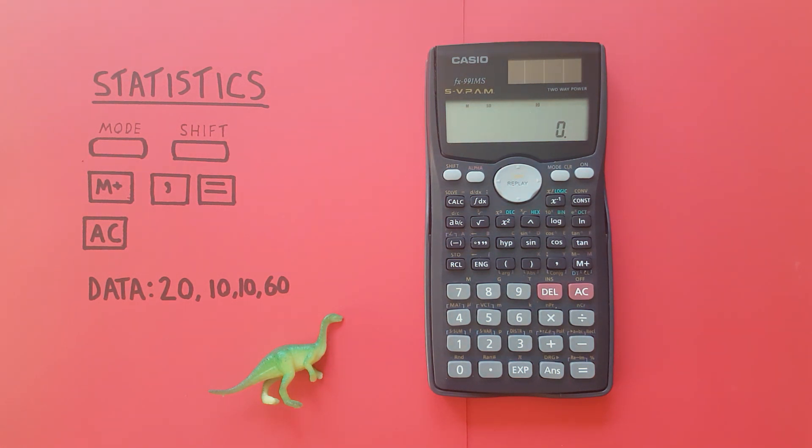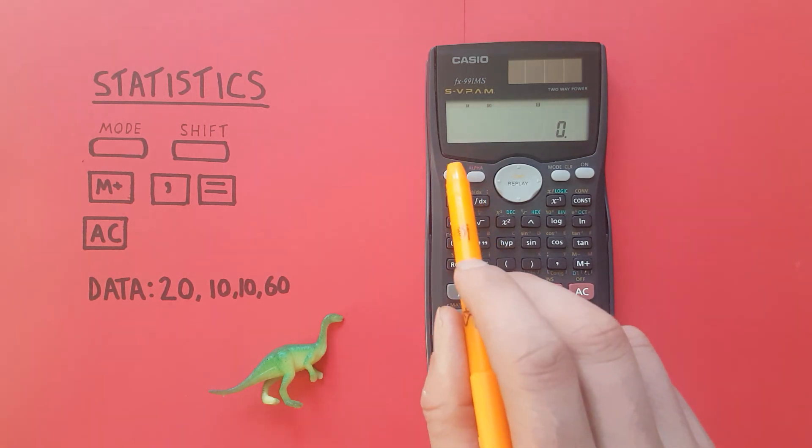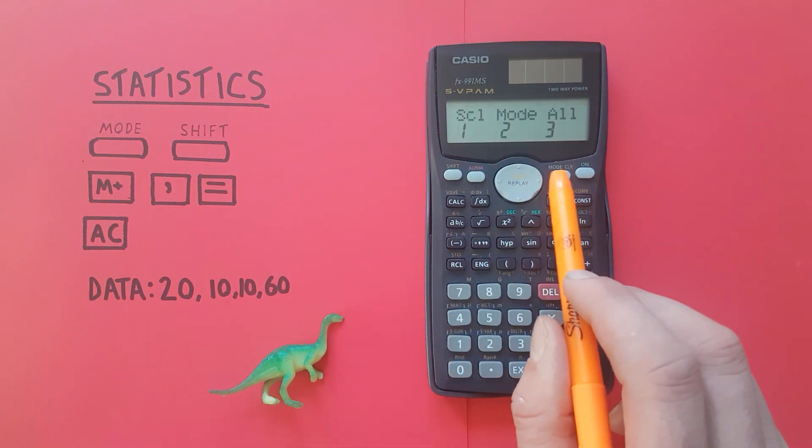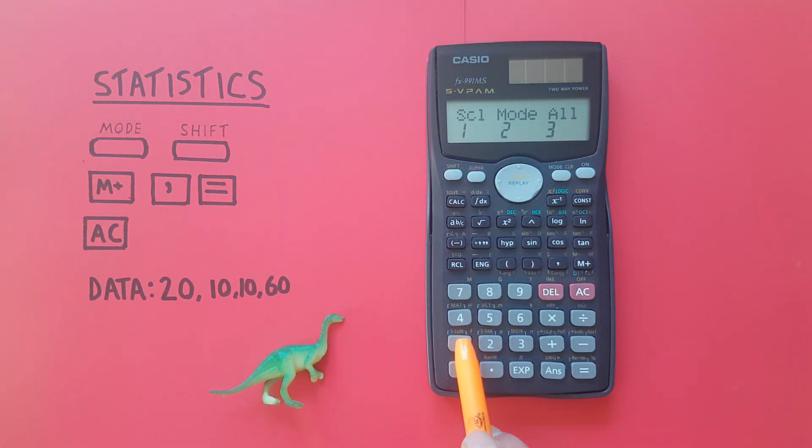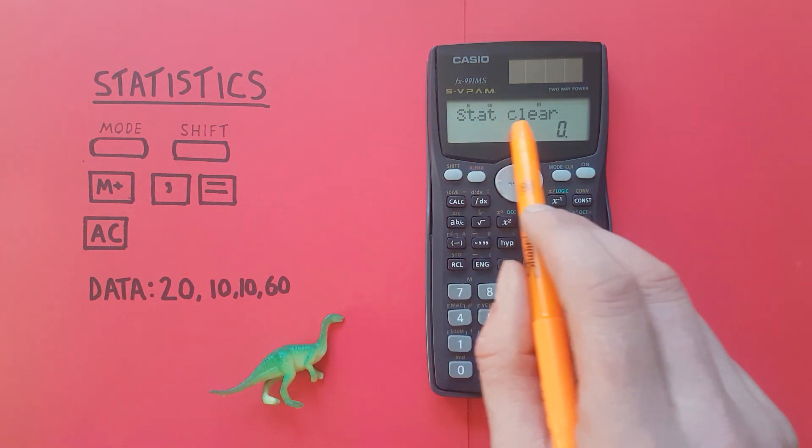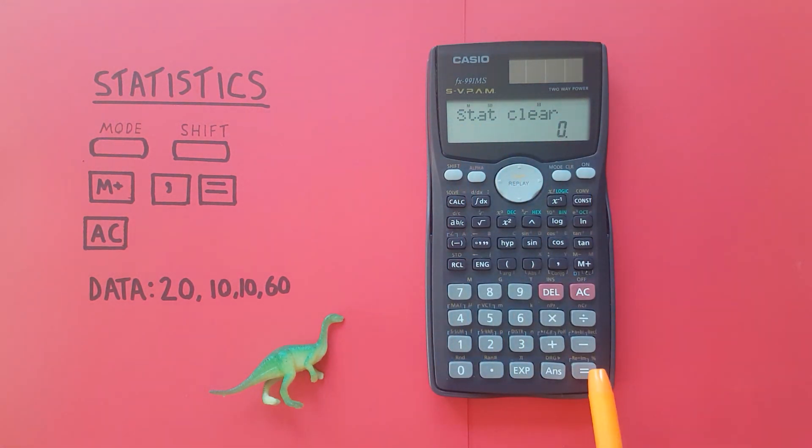All right, now the next thing we want to do is clear any old data in here that might pollute our calculations. To do that we press shift mode and the option we want here is this SCL or stat clear. So we press one. It says stat clear there. We press equals and any old data that was left in our stats has been cleared now.